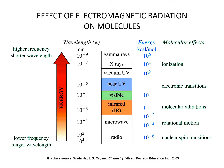Here we show the effect of electromagnetic radiation on molecules. As energy increases, the wavelength — measured in centimeters — decreases, while the energy in kilocalories per mole also increases. X-rays cause ionization. Near UV light causes electronic transitions, as does visible light. Infrared radiation promotes molecular vibrations. Microwave promotes rotational motion. Radio frequency promotes nuclear spin transitions.